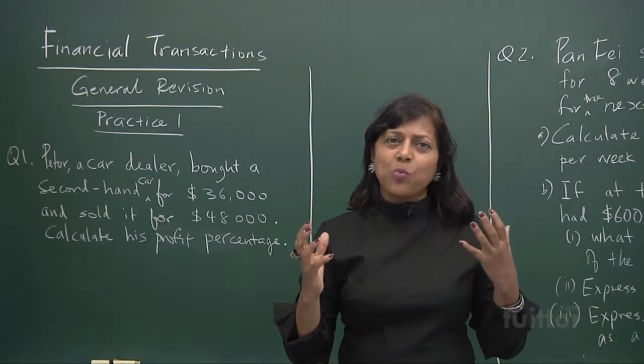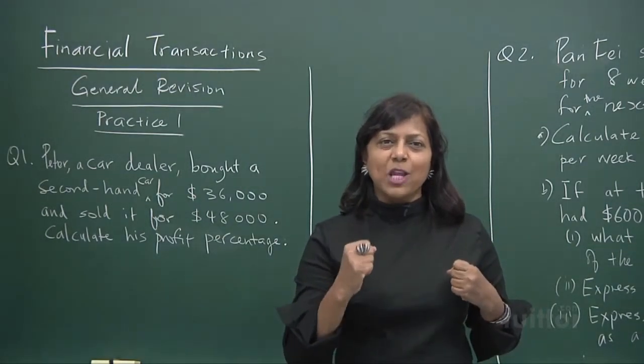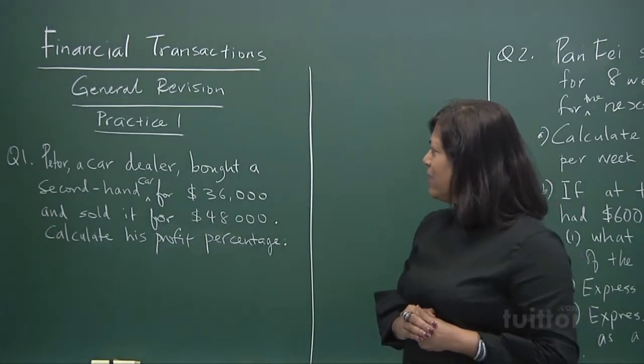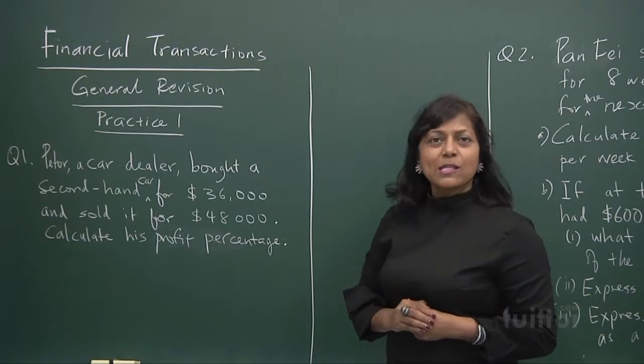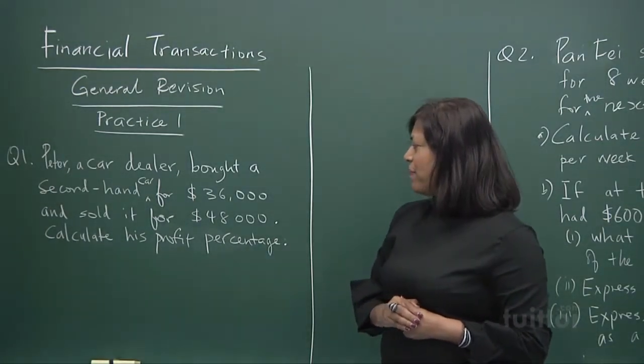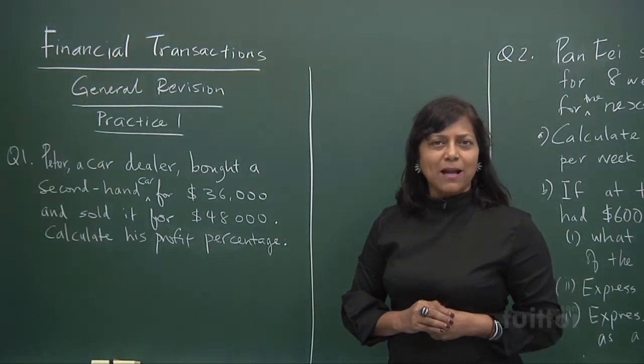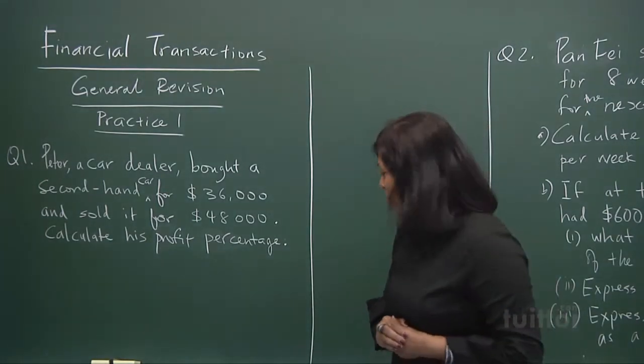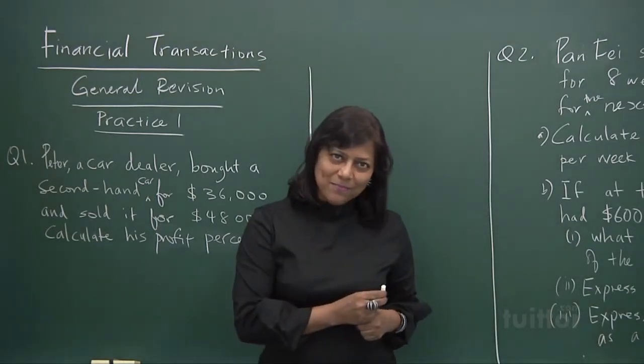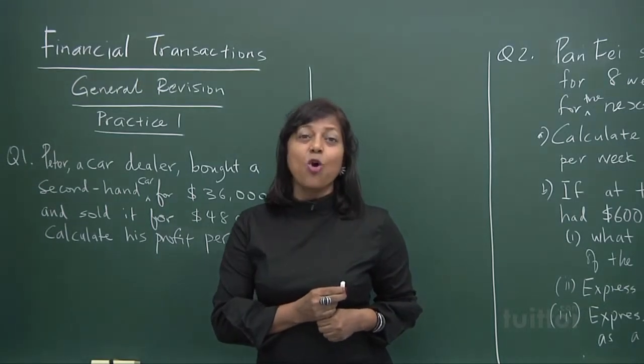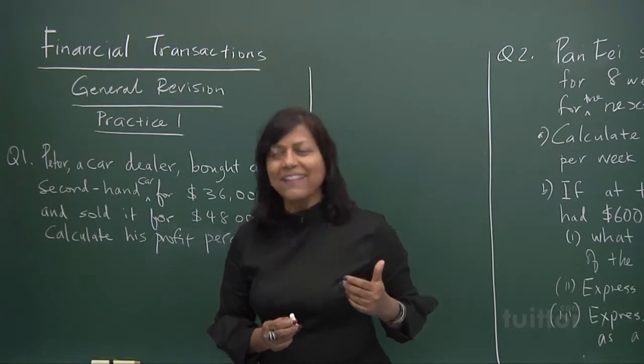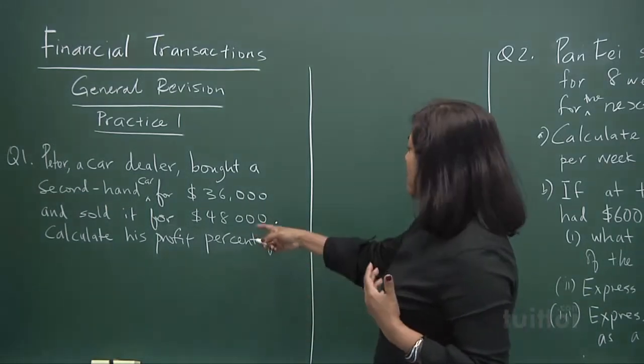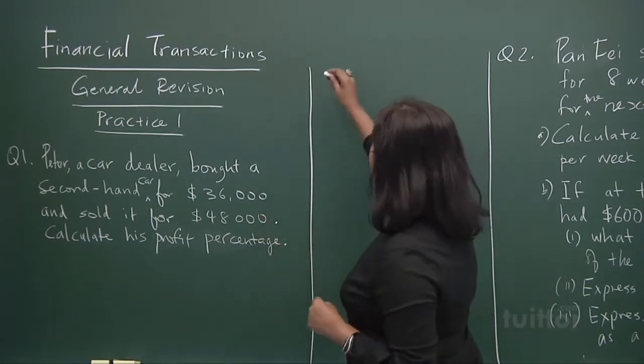Let's look at this sum, this Peter the car dealer. Looks like he's a second-hand car dealer. He bought a second-hand car for $36,000 and sold it for $48,000 and calculate his profit percentage. Do you think you like to be a car dealer? One car, you buy $36,000, you sell at $48,000? Oh, wow! But all you need to do is learn to talk. Besides knowing financial transaction, skills in talking is really important. So please do that at a sideline.